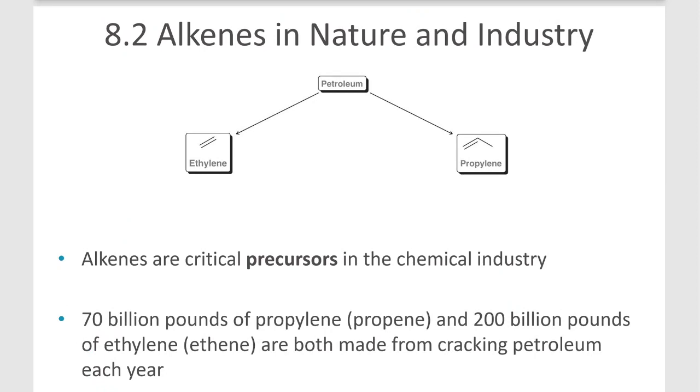Now again, alkenes are found in nature and industry. From petroleum, we can distill some small molecules and create ethylene or ethene. This molecule is also called ethylene, or propylene. Or propene. This molecule is also called propene. And alkenes are precursors for plastics, generally, and even some other compounds, as we're going to see in this chapter, in the chemical industry. So 70 billion pounds of propylene and 200 billion pounds of ethylene are made from cracking petroleum each year. And a lot of those are used in the formation of plastics, polyethylene and polypropylene.